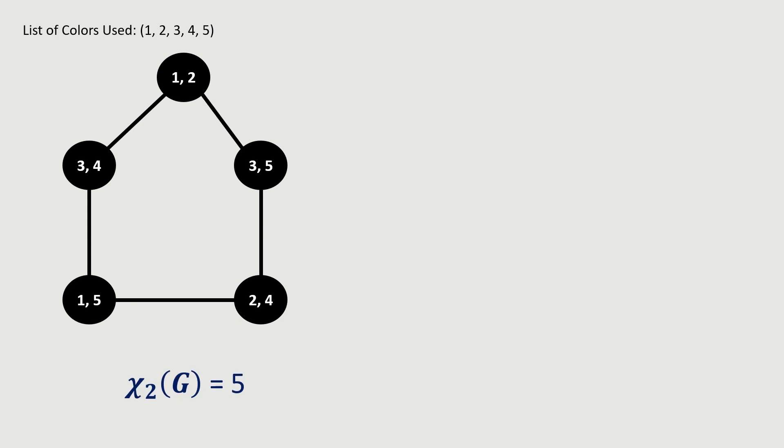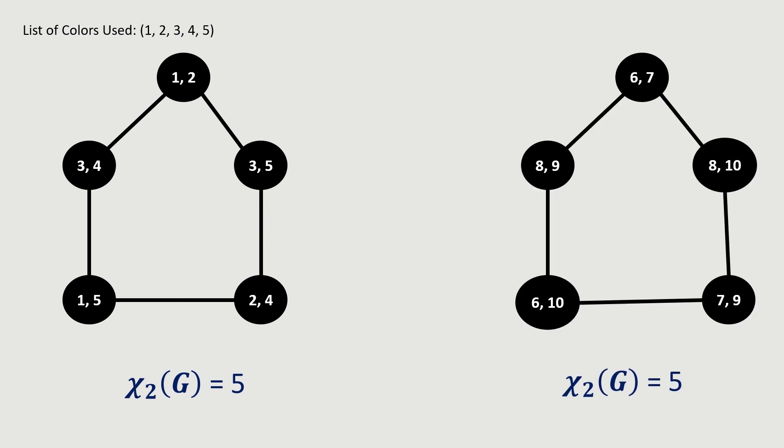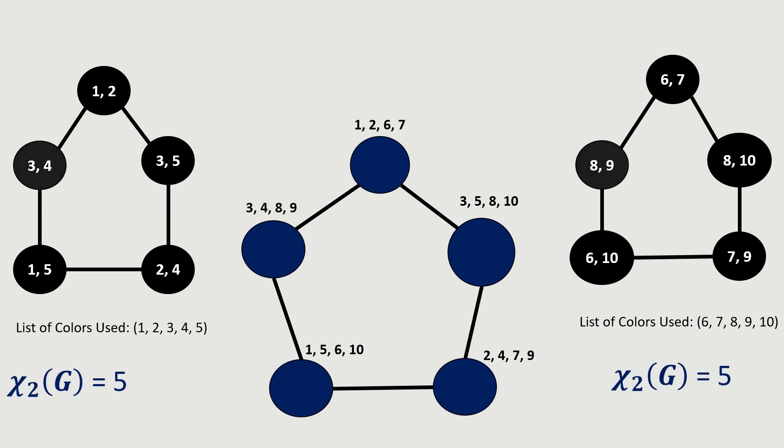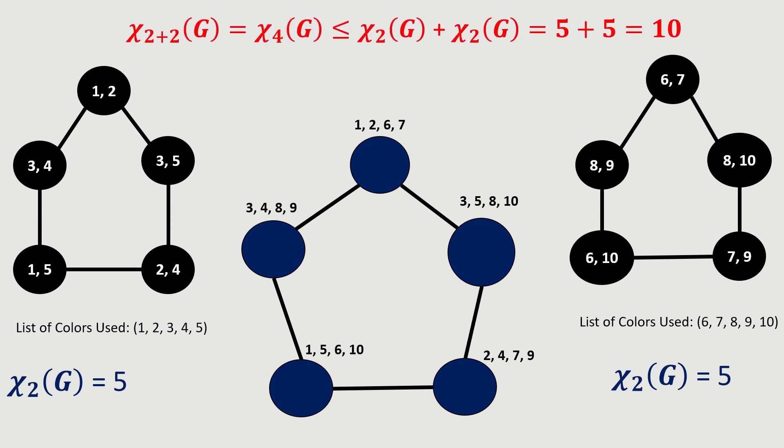This might seem pretty abstract, so let's look at a concrete example of the sub-additivity of b-fold chromatic numbers. Say we have a graph G and we minimally two-fold color it using the colors 1, 2, 3, 4, and 5. Note that I'm using numbers to represent the colors because we'll be using too many colors to distinguish visually. Now say we two-fold color this graph again using a total of five entirely distinct colors from those we used before — let's call these colors 6, 7, 8, 9, and 10. By joining the color sets applied to each vertex, we get a proper four-fold coloring with 5 plus 5, or 10 total colors. I hope this example clarifies the idea that b-fold chromatic numbers are sub-additive.